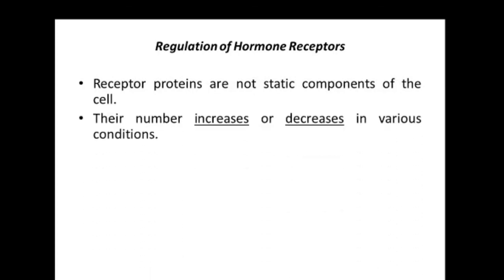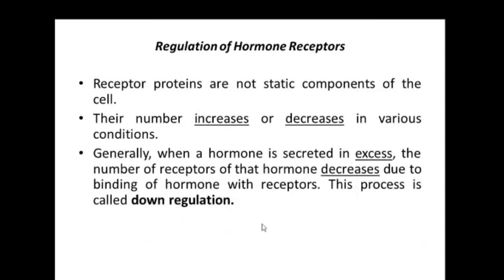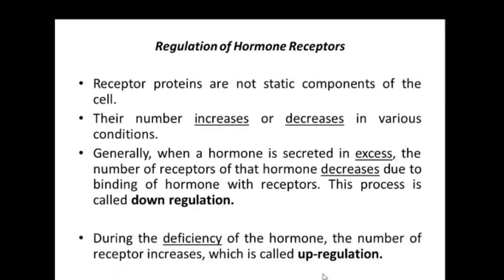These receptors are regulated — their numbers can increase or decrease under various conditions. When the numbers decrease, it is called downregulation, which occurs when the hormone is in excess. Upregulation occurs when the hormone is deficient, causing receptors to become more numerous. In summary, this video looked at how hormones are secreted, how hormones are transported, the general receptors of hormones, and how hormones are degraded. Thank you very much.